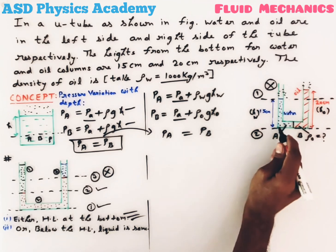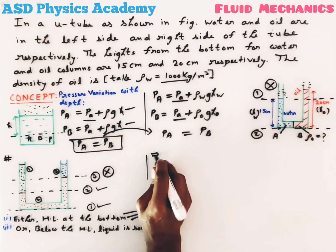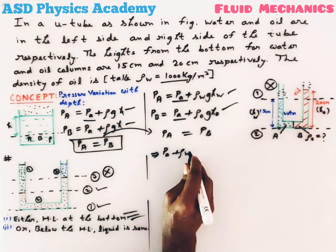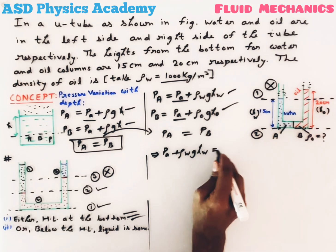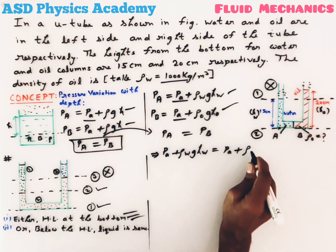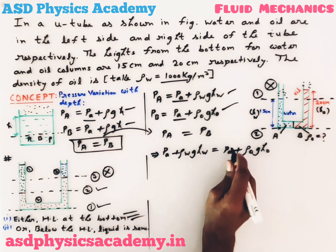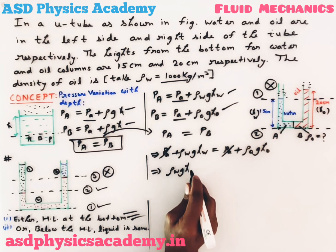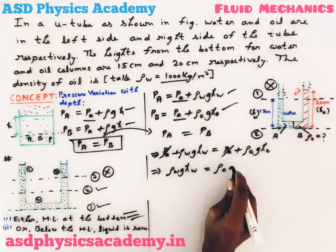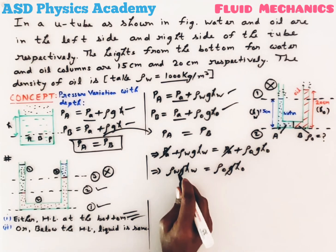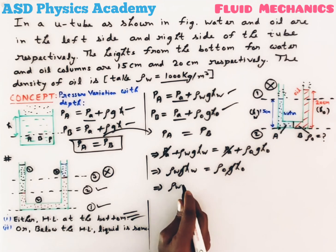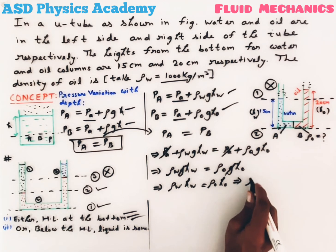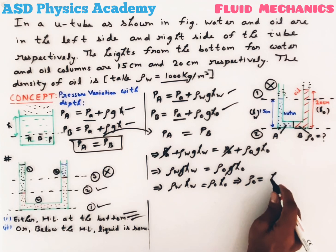From Pascal's Law, pressure at point A equals pressure at point B. So: P_a + ρ_w × g × h_w = P_a + ρ_0 × g × h_0. The P_a terms cancel, and then g cancels, giving us: ρ_w × h_w = ρ_0 × h_0. Therefore, ρ_0 = (h_w / h_0) × ρ_w.